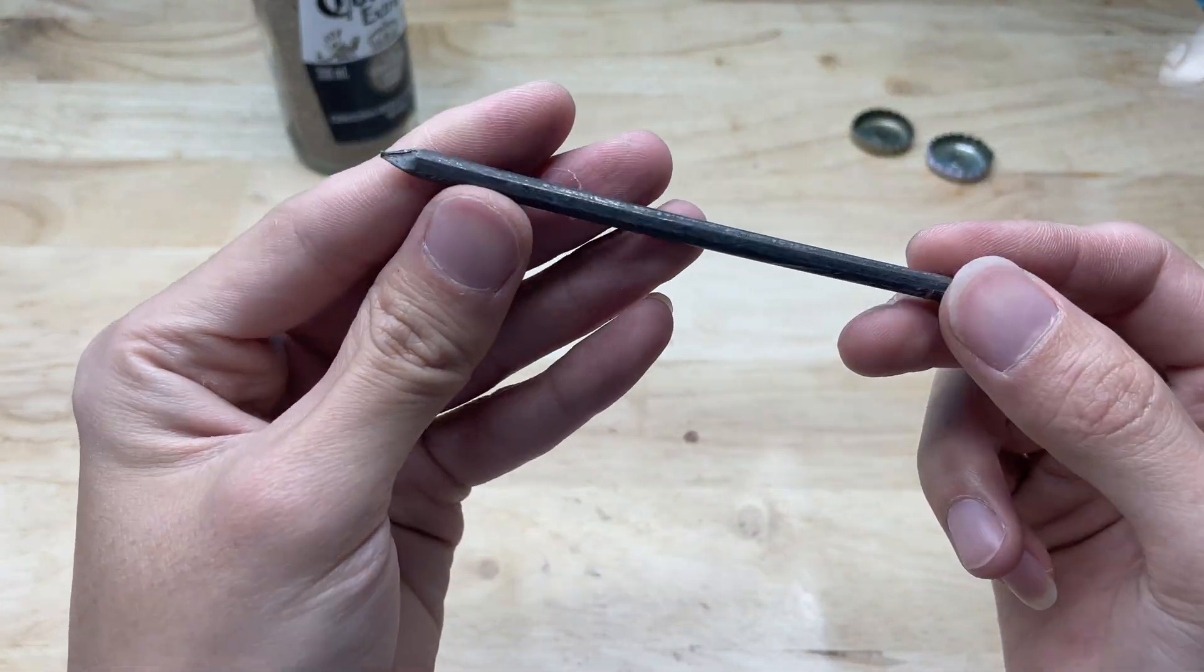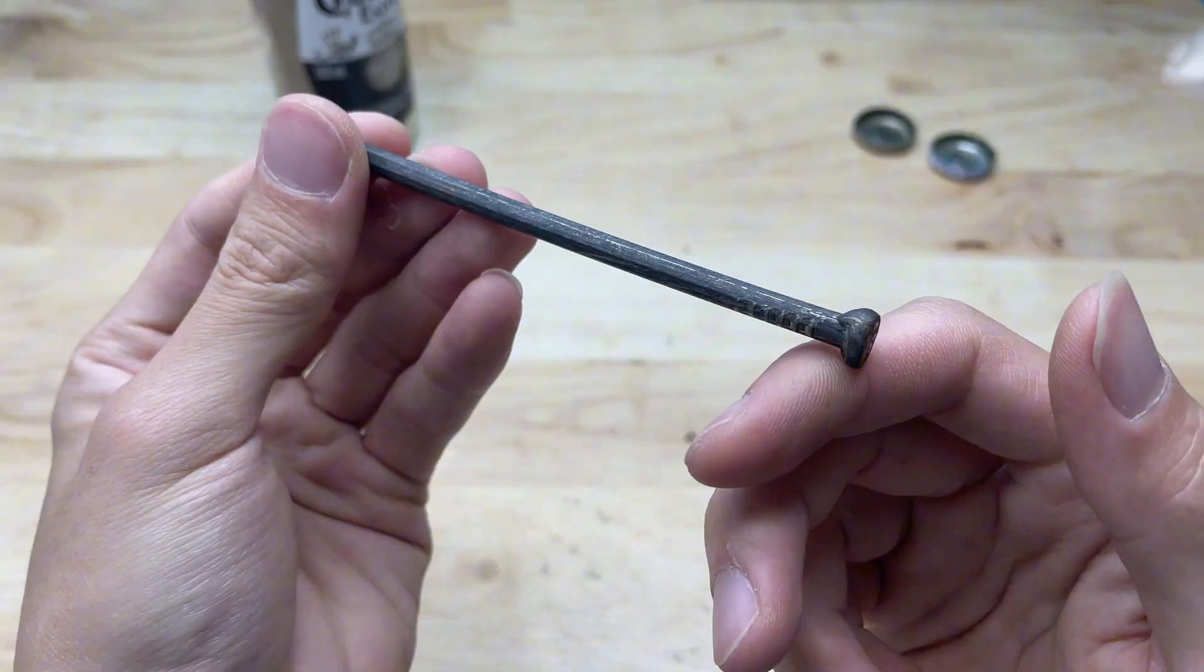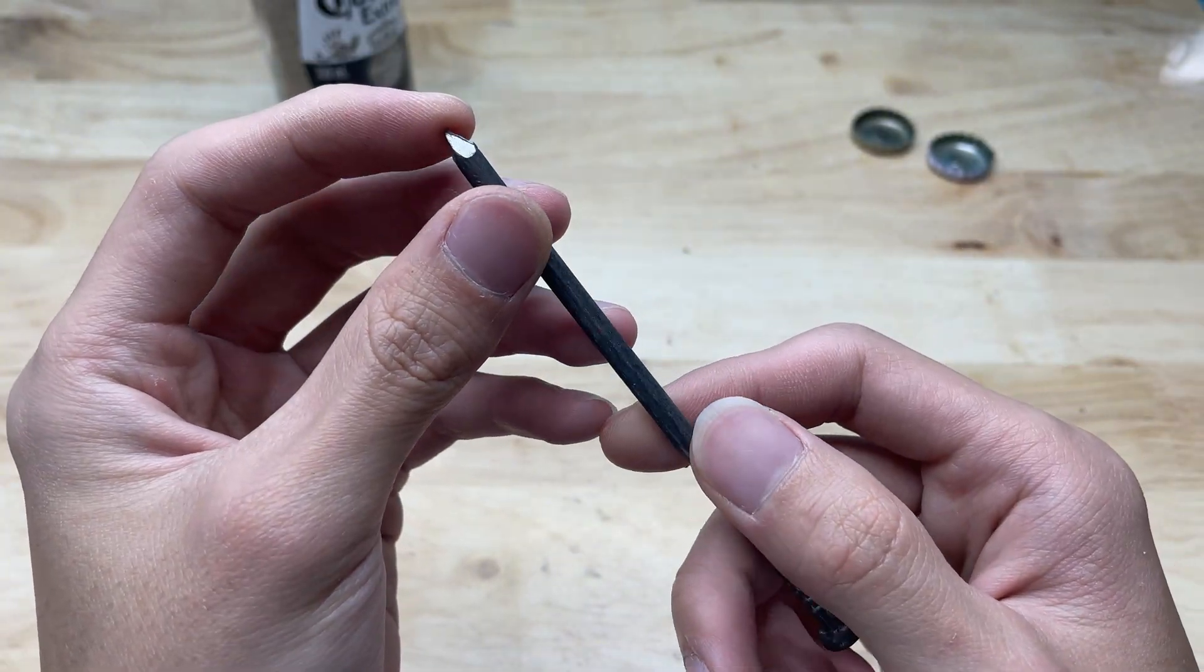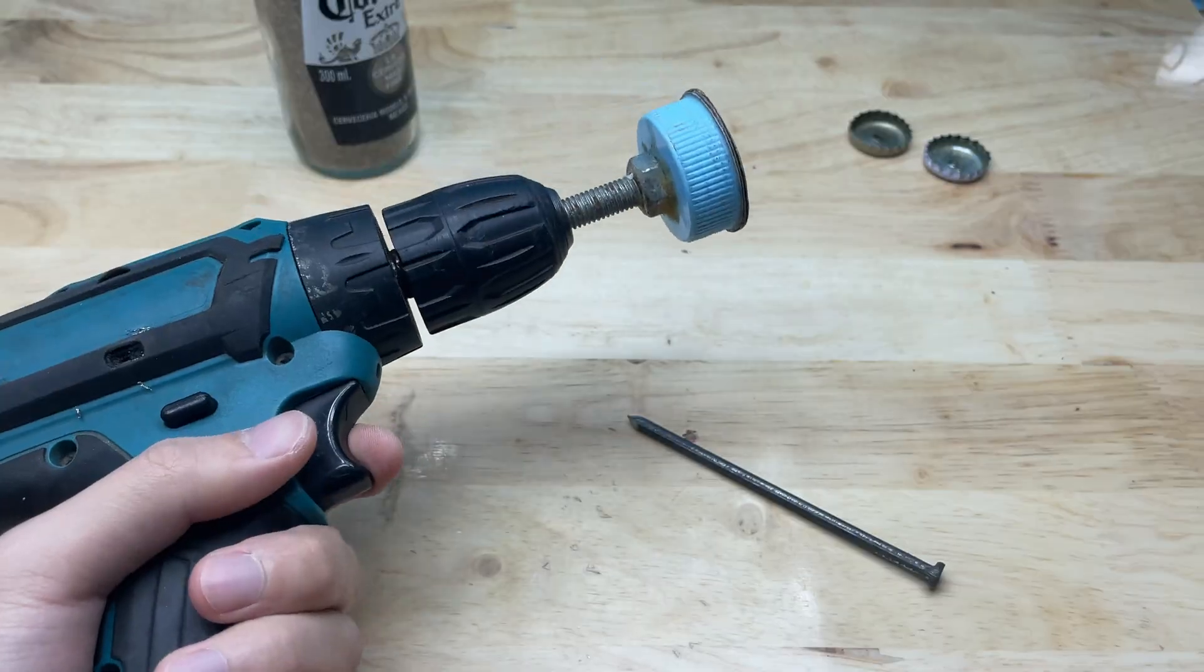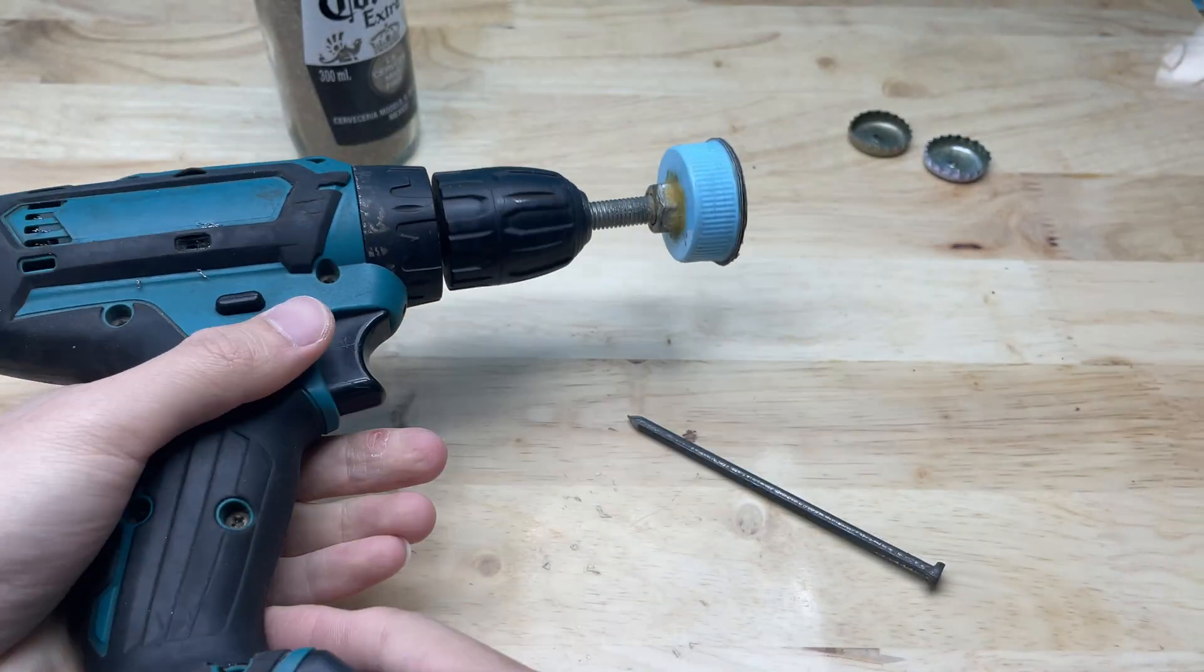Next, I will use a nail as the welding tip. The head of the nail is slightly sharpened to create a smaller, more focused contact point, which helps achieve greater precision when working on small details.